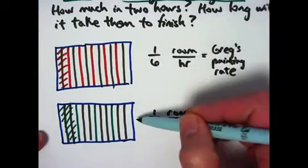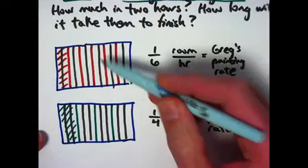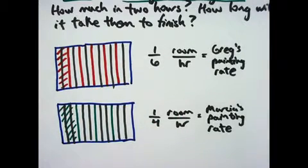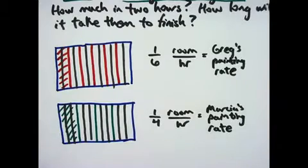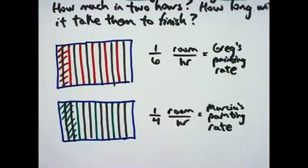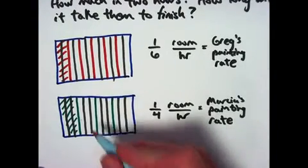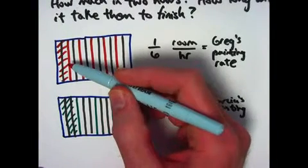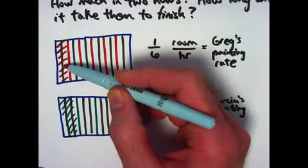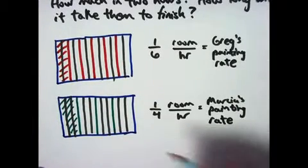Each of these, in both Greg and Marsha's case, these thin slices are the same size. Each of those represents 1 twelfth of the overall room. And that allows us to see, hopefully you can see visually, that means the answer is going to be, well, 2 twelfths plus 3 twelfths is 5 twelfths.